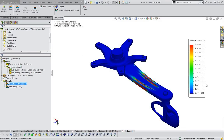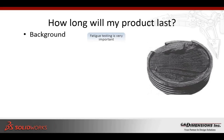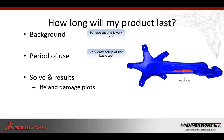Just to summarize the fatigue analysis: we talked about the importance of fatigue analysis, and you can define how long the product must last — in this case we set up 7 million cycles. We can solve and view the results: the life and damage plots tell you at which point it will fail. Over 7 million cycles, you can see it might fail at around 3.4 million cycles, allowing you to change your design accordingly.